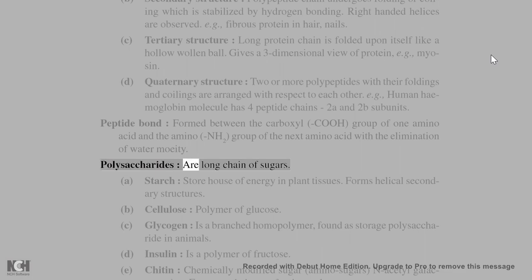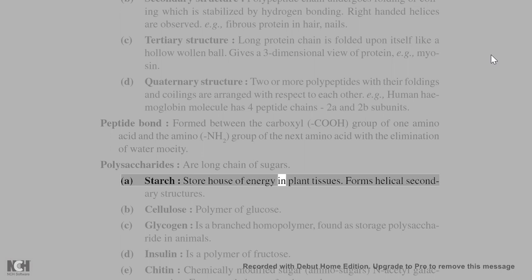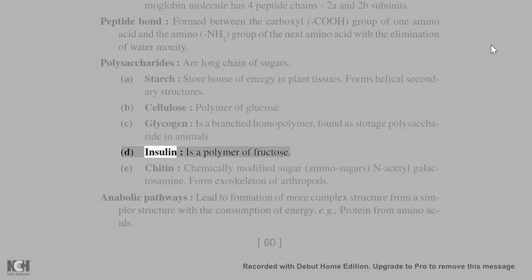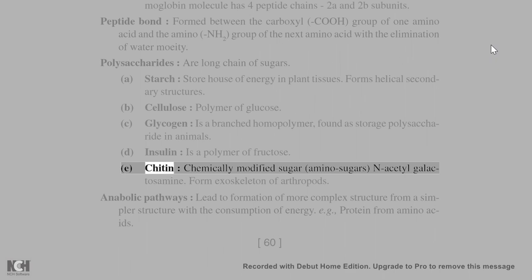Polysaccharides are long chain of sugars. Starch: storehouse of energy in plant tissues, forms helical secondary structures. Cellulose: polymer of glucose. Glycogen: is a branched homopolymer, found as storage polysaccharide in animals. Inulin: is a polymer of fructose. Chitin: chemically modified sugar, amino sugars, N-acetyl-galactosamine, forms exoskeleton of arthropods.